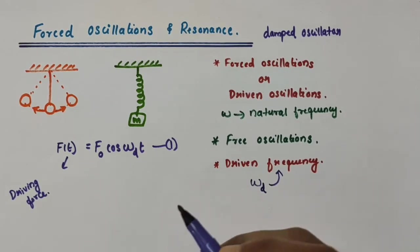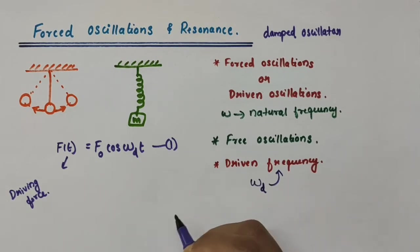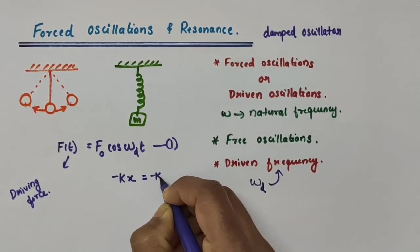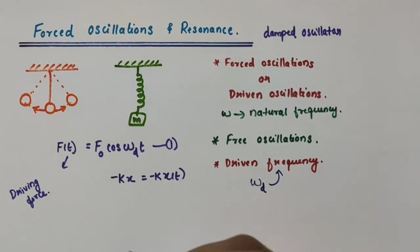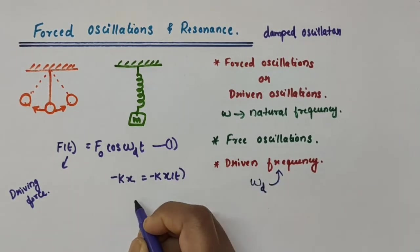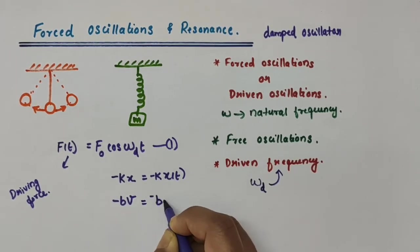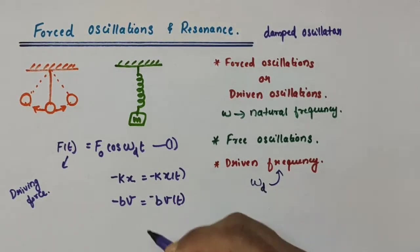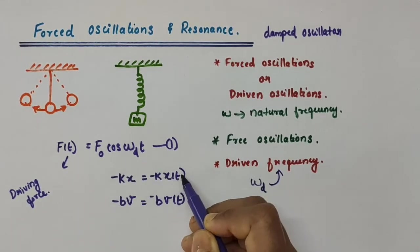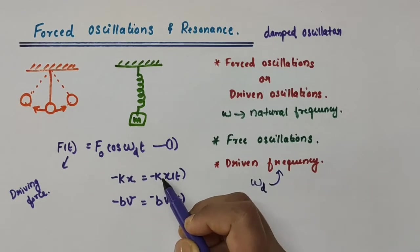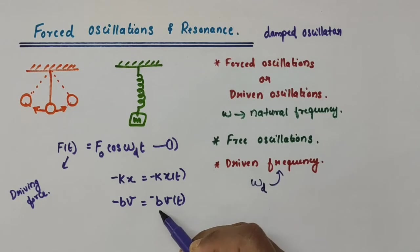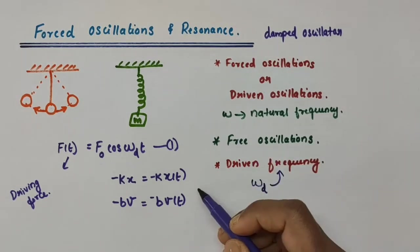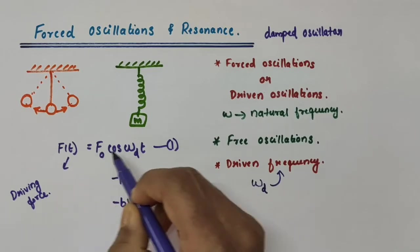As we discussed in previous videos on oscillations, there is a restoring force minus k·x(t) acting on it, and also a damping force minus b·v(t). In our present case, there is one additional force acting on the system, which is the time-dependent driving force.